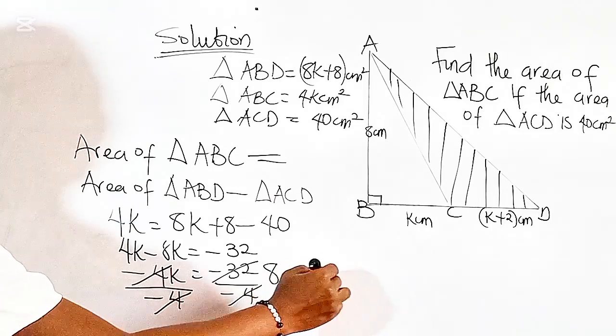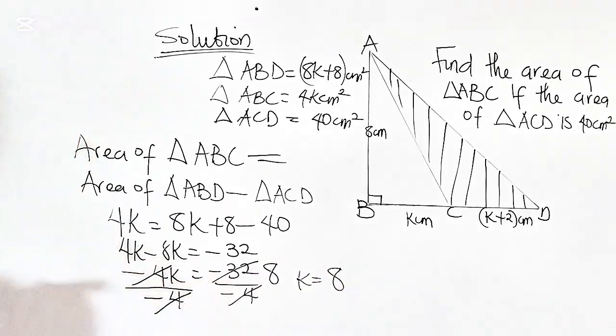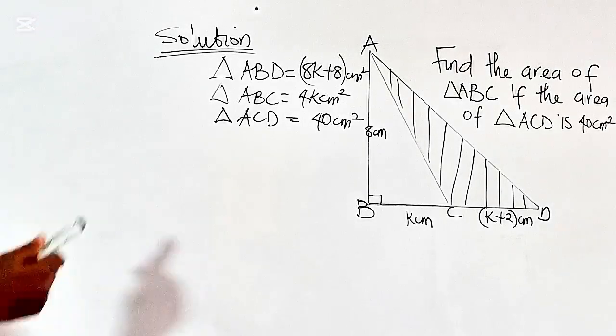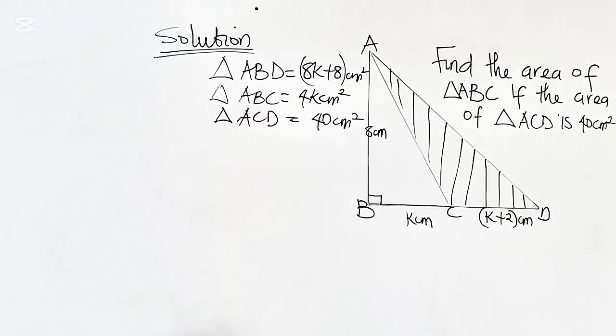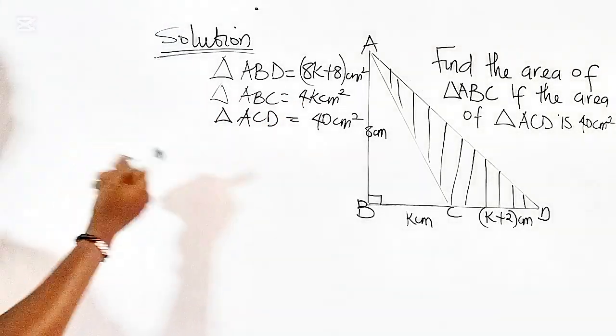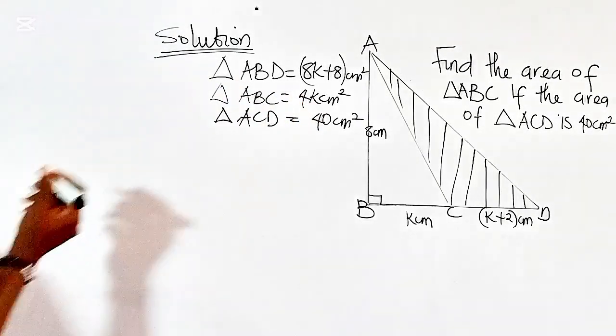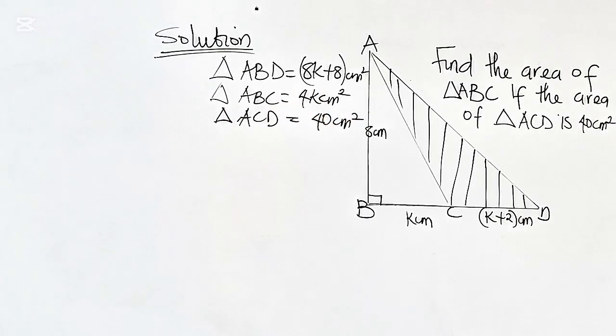So the value of K is equal to 8. Remember, I told you that 4K is not the actual value. So we are going to substitute the 8 for K in this expression.